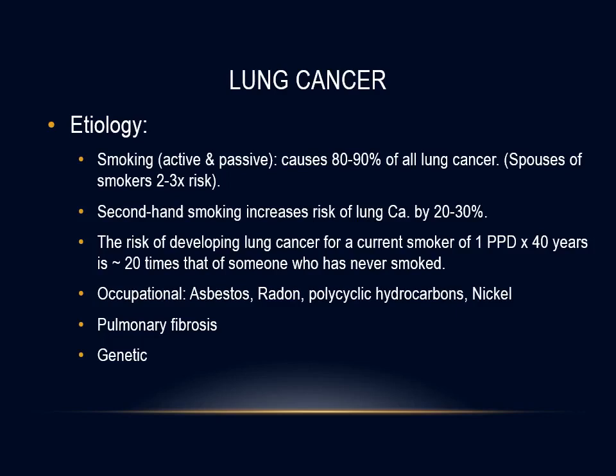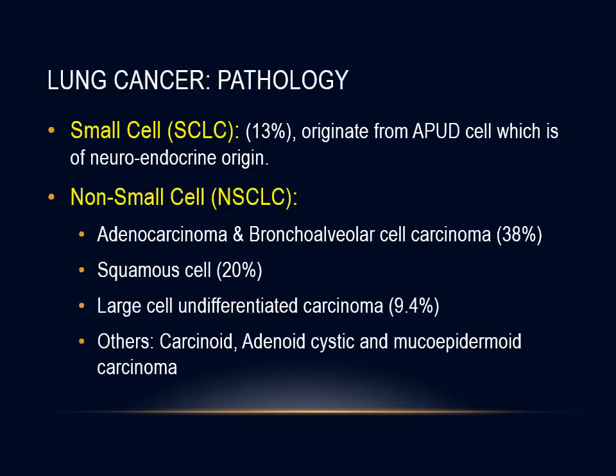Second-hand smoking increases the risk of lung cancer by at least 20%. The risk of developing lung cancer for a current smoker of one pack per day for more than 40 years is 20 times that of a non-smoker. Other risk factors include radiation therapy and environmental toxins such as asbestos, radon, metals, ionizing radiation, and polycyclic aromatic hydrocarbons. Patients with lung diseases such as pulmonary fibrosis may have increased risk of developing lung cancer. Genetic factors can affect both risk and prognosis, and there is a clearly established familial risk.